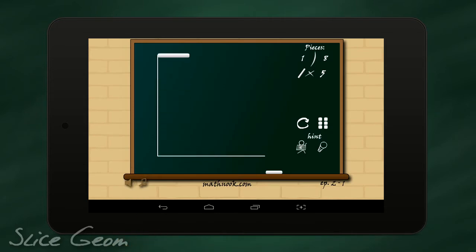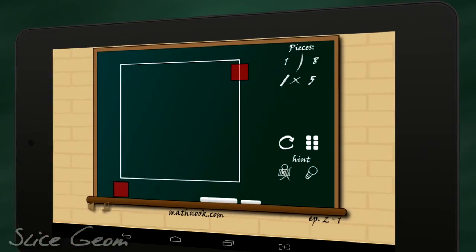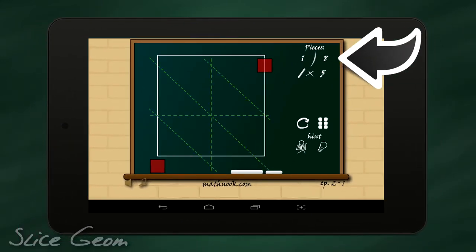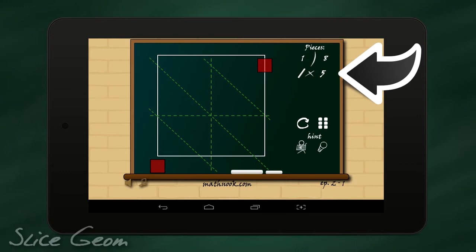Once your shape is drawn, pay attention to the top right corner of the chalkboard to help guide you to the solution. The top value tells you how many pieces are required, while the bottom value tells you the number of cuts to be made.